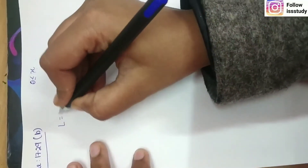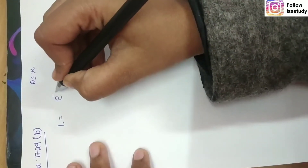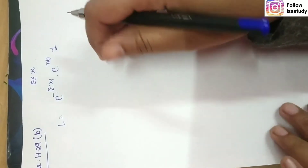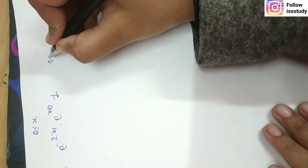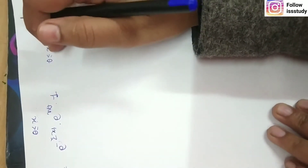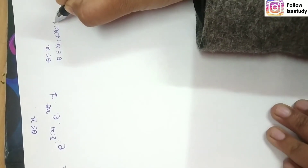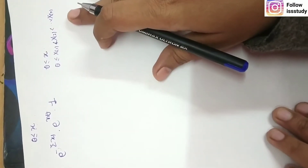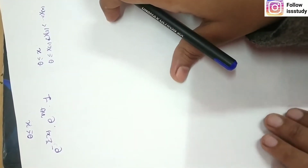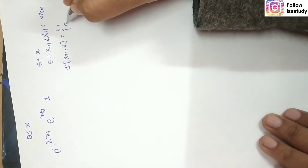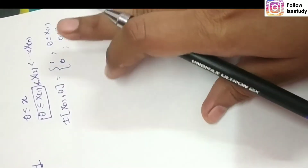Now we discuss the procedure. First, we write the likelihood function from the PDF: L(theta) = e^(-Σxi) · e^(nθ) · 1. Next, the range is theta ≤ x. We break this range into order statistics: X(1) ≤ X(2) ≤ ... ≤ X(n). Then we denote the indicator function as I(X(1), theta), which takes value 1 when theta ≤ X(1), and 0 otherwise.